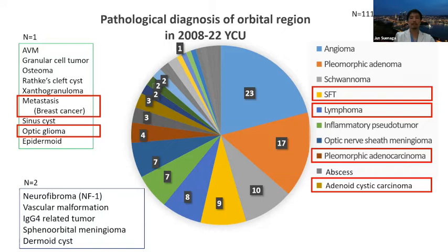The red ones are malignant neoplasms arising in the orbital region. Other tumors include neurofibroma related to NF1, vascular malformation, IgG4-related tumor, sphenorbital meningioma, and dermal cysts. Very rare ones include AVM, granular cell tumor, osteoma, lacrimal cyst, xantho-granuloma, metastasis from breast cancer, and optic glioma. There are many kinds of tumors that can arise in the orbital area. According to the AJCC classification, orbital and adnexal tumors are classified as lacrimal gland tumors, lymphoma, or other types.